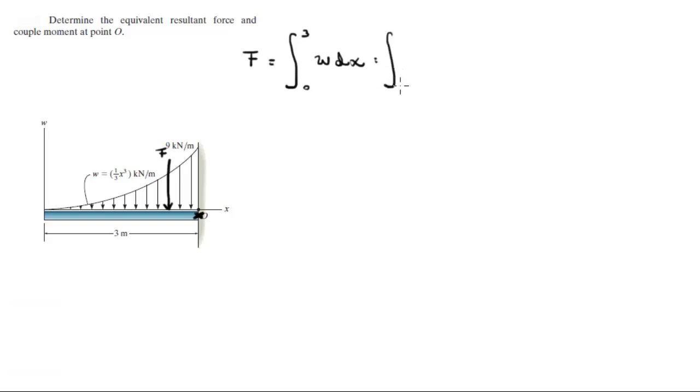Now this is equal to the integral from 0 to 3 of W which is one-third x cubed dx. That will be the integral from 0 to 3. Let me just solve it now. That would equal to x to the 4 over 12 from 0 to 3, which would equal to 6.75 kN.